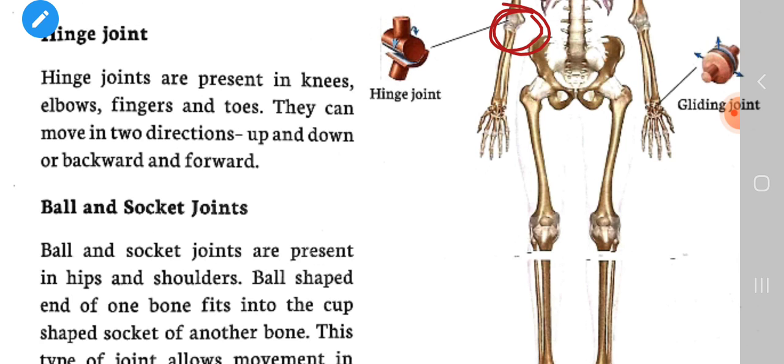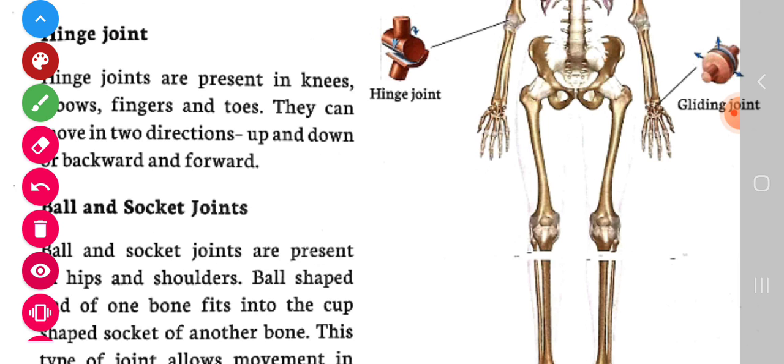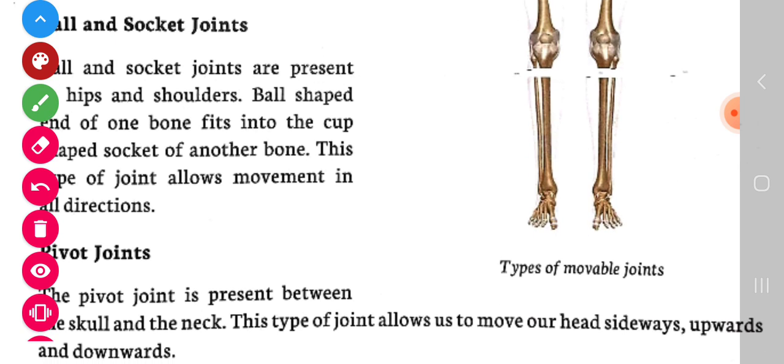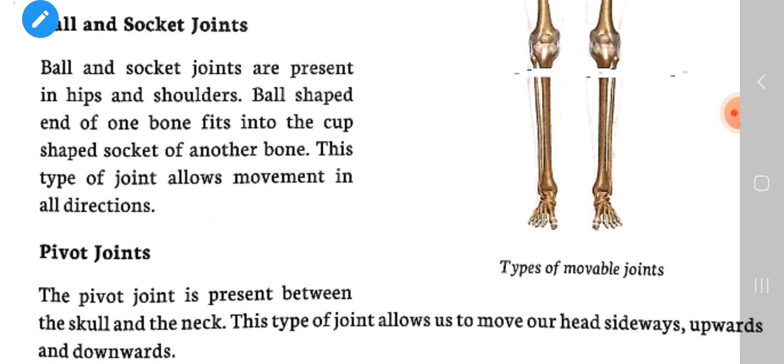Ball and socket joints are present in hips and shoulders. The ball-shaped end of one bone fits into the cup-shaped socket of another bone. This type of joint allows movement in all directions.